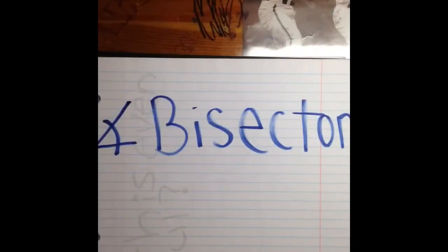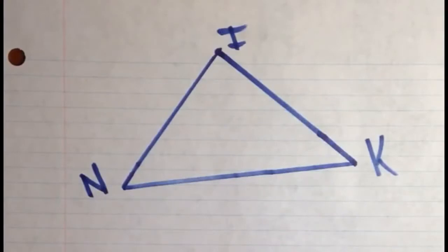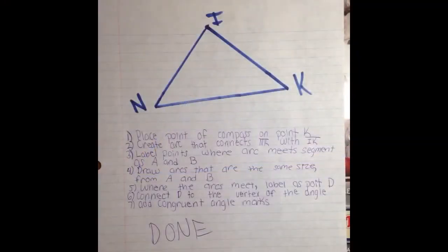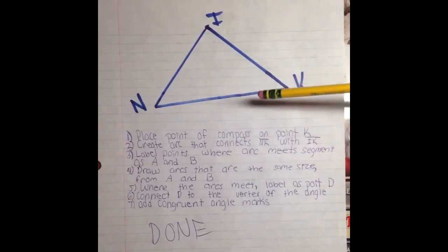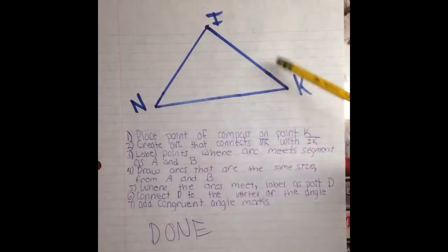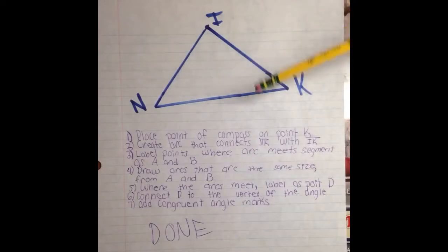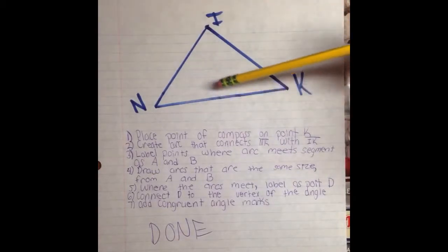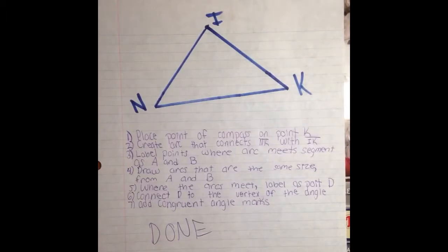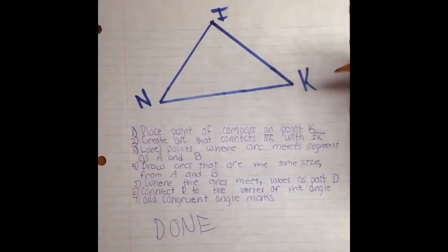Next I will show you how to construct an angle bisector for triangle NIK, bisecting angle K. Place the point of the compass on point K and create an arc that connects segment NK to IK. Label the points where the arc meets the segments as A and B. Draw arcs of the same size from A and B. Where these arcs meet, label the point as D. Connect point D to angle K, add congruent angle marks, and you are done.